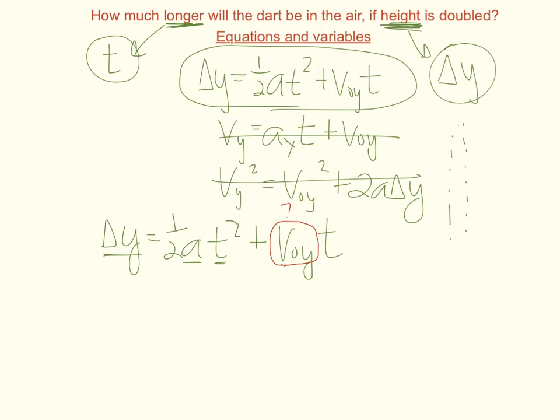So what we're going to look at is instead of looking at the dart going up and down, let's just look at the second half of the motion, the dart going down. Why would we look at that? Because then at the very top we can say the initial velocity is zero and now we can just worry about just the second half of the motion.